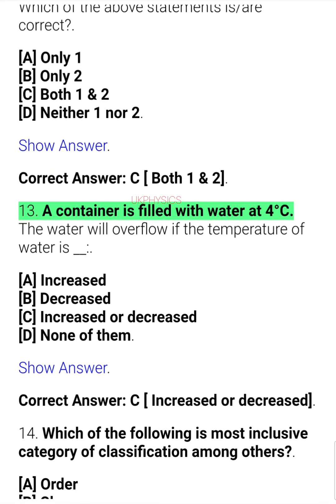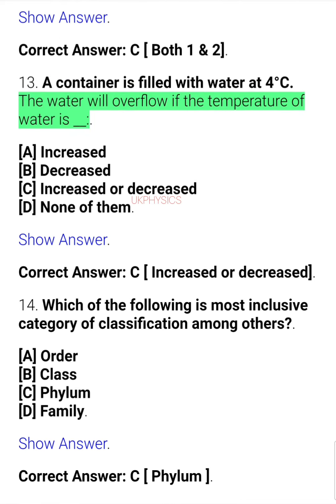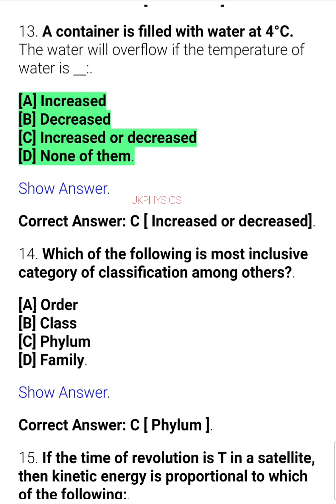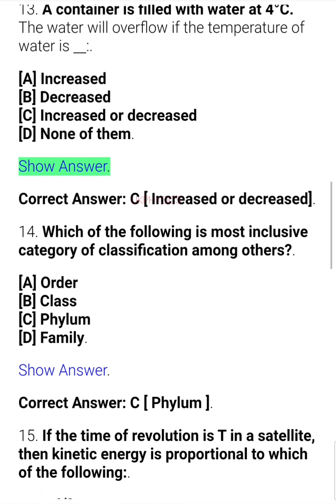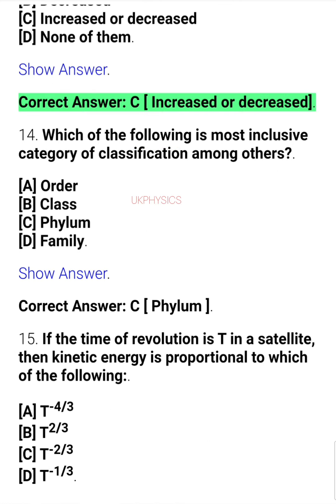Question 12. A container is filled with water at 4 degrees Celsius. The water will overflow if the temperature of water is: A. Increased, B. Decreased, C. Increased or decreased, D. None of them. Correct answer: C. Increased or decreased.